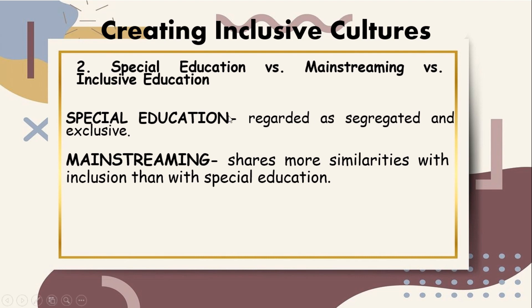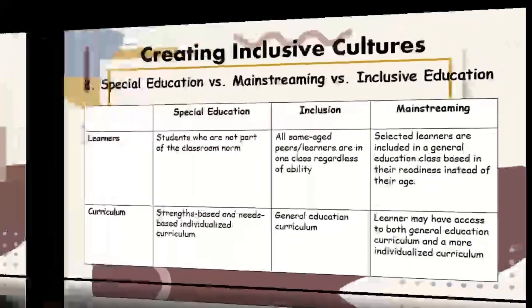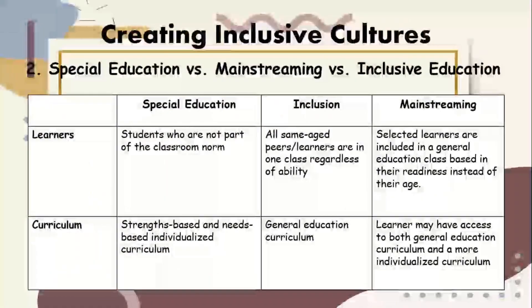Mainstreaming shares more similarities with inclusion than with special education — both look at integrating the child with additional needs into a general education setting, though there are differences between the two as well. We have a table comparing the three. In terms of learners: in special education, students who are not part of the classroom norm; in inclusion, all same-aged peers are in one class regardless of ability; in mainstreaming, selected learners are included in a general education class based on their readiness rather than their age.